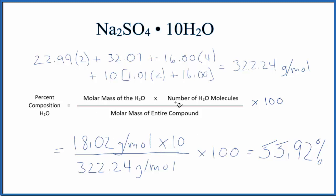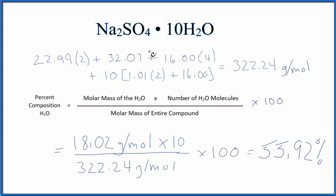My periodic table rounds to two decimal places, so if you use a different periodic table, you might get a slightly different answer. This is Dr. B with the percent composition by mass for Na₂SO₄·10H₂O, sodium sulfate decahydrate. Thanks for watching.